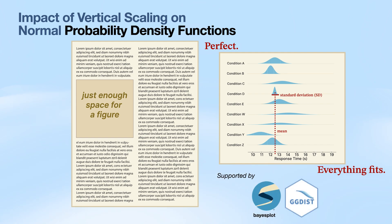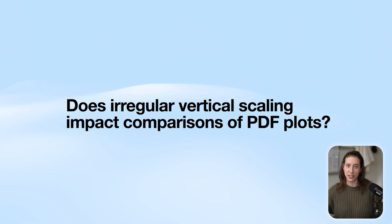And this is so common that it's actually supported by very popular statistics visualization software like Stan Bayes plot and ggdist. So that made us wonder if this irregular vertical scaling of PDF plots can impact people's comparison of those plots.